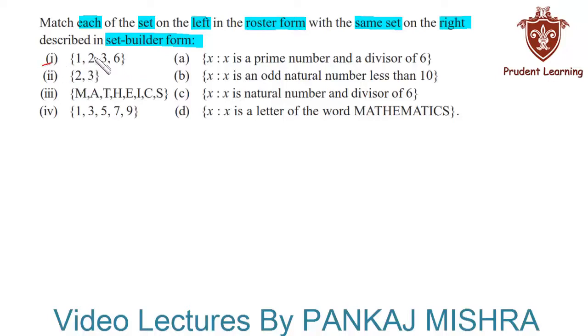us consists of elements 1, 2, 3, and 6. Well, we know that all these numbers are natural numbers and all these numbers are also divisors of 6. So this will match with C: x is such that x is